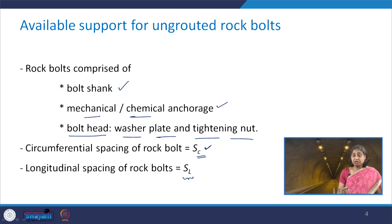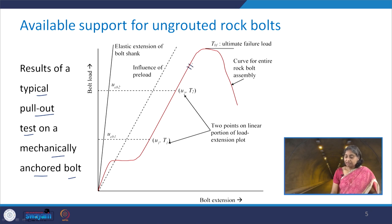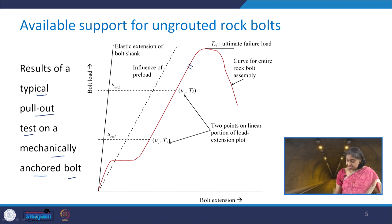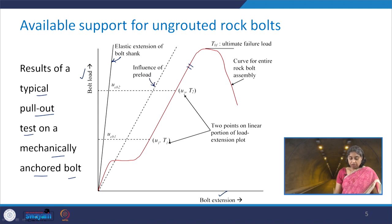The question is how to determine the capacity of the bolt. For this purpose, the typical pullout load test results are shown for a mechanically anchored bolt. The curve in red is the curve for the entire rock bolt assembly. On the x-axis we plot the bolt extension and on the y-axis it is the bolt load. We have two aspects: the first is the elastic extension of the bolt shank with the influence of preload, and the second is the complete rock bolt assembly response of bolt load versus bolt extension.